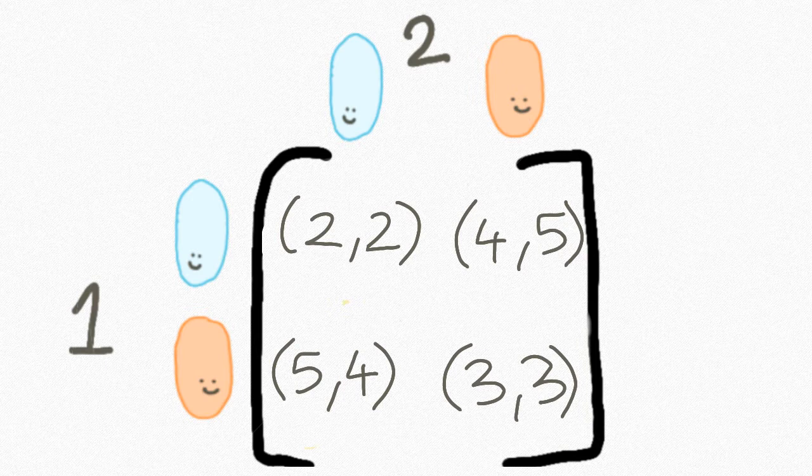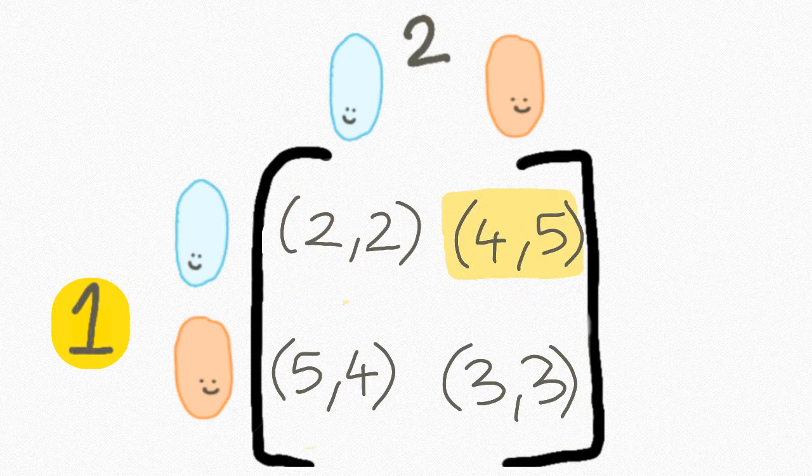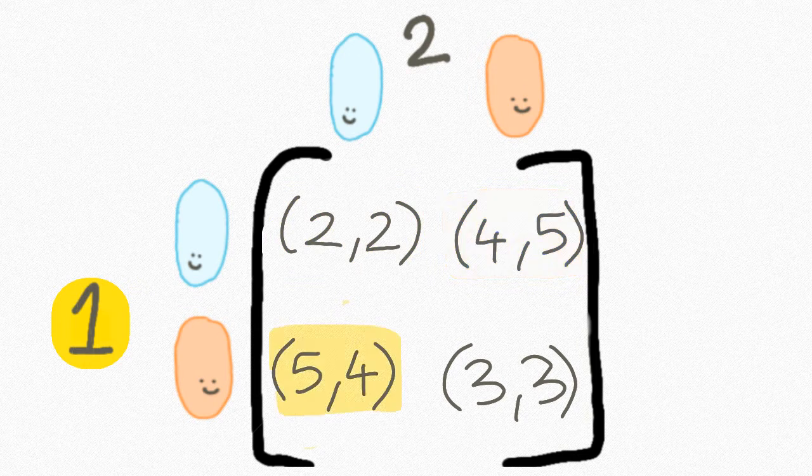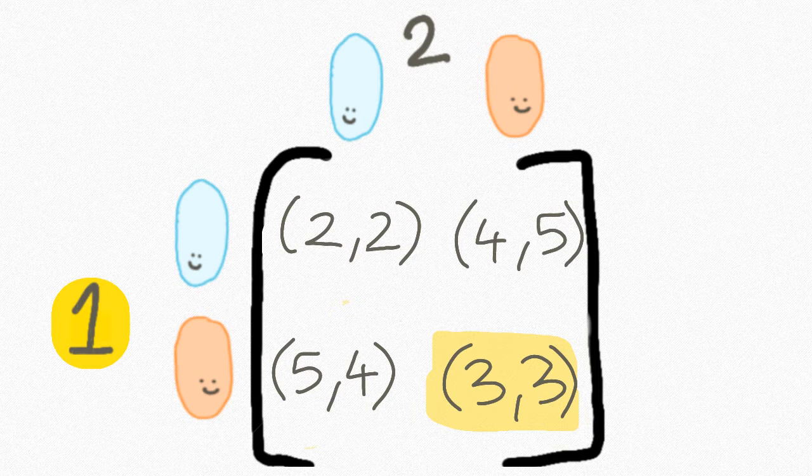But let's look at player 1's payoffs. If it's blue and it meets another blue type bacteria, both get a payoff of 2. But if the bacteria it meets is an orange strain, the blue gets a payoff of 4. If it's an orange bacteria and it meets a blue strain, it will get a payoff of 5. But if it meets an orange strain, both get a payoff of 3. Exactly the same logic applies to player 2.